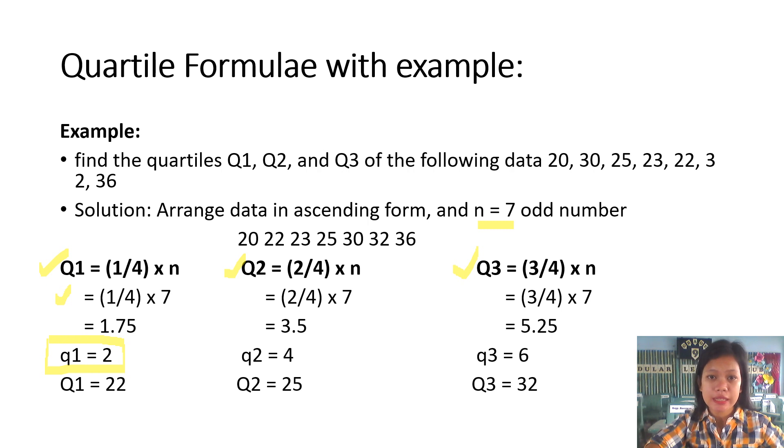From the first data, we have to count one and two. First data here is 20 and the second is 22. In other words, the data 22 and 20 falls under the distribution of quartile 1.